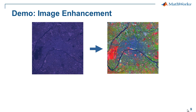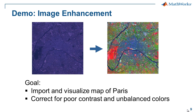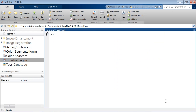Our first demonstration uses a Landsat satellite image of Paris. On the left hand side there are definitely some issues — a lot of purple, not a lot of contrast. On the right hand side is what we want to drive towards. The goal is to import this map of Paris, correct for poor contrast and unbalanced colors, and make the image a lot more usable.